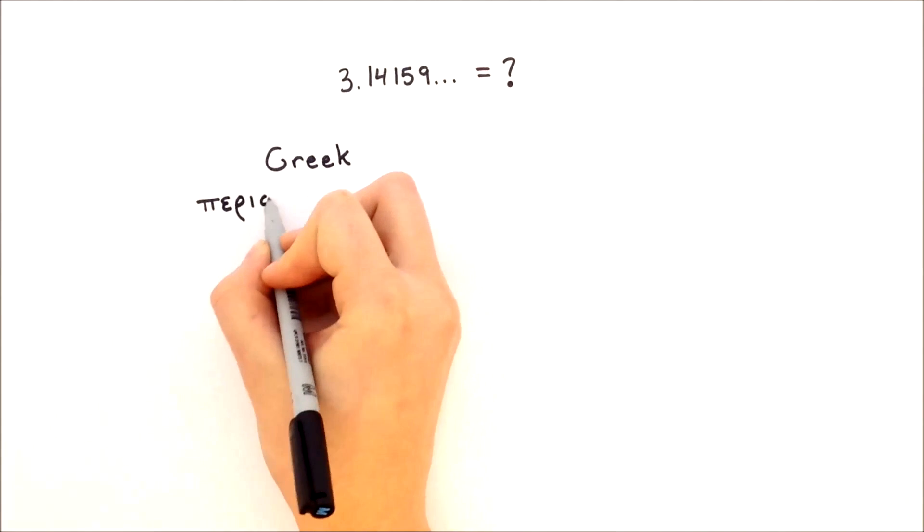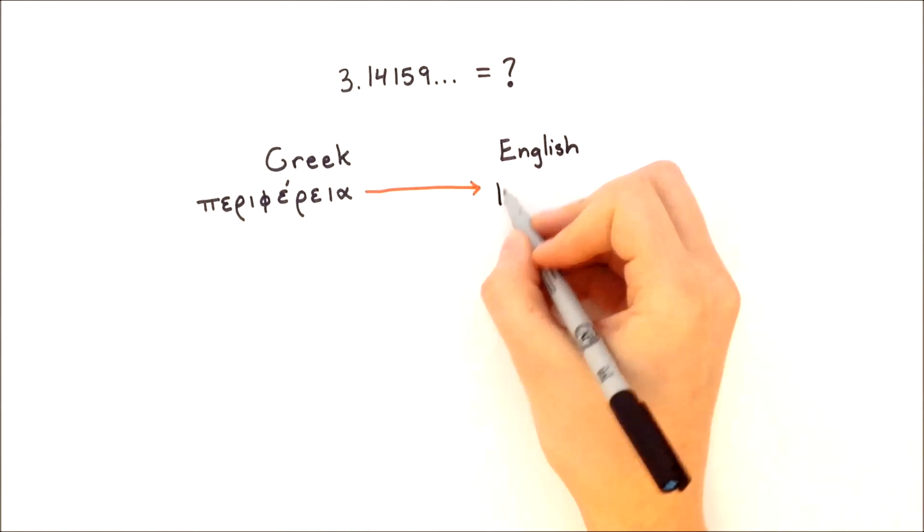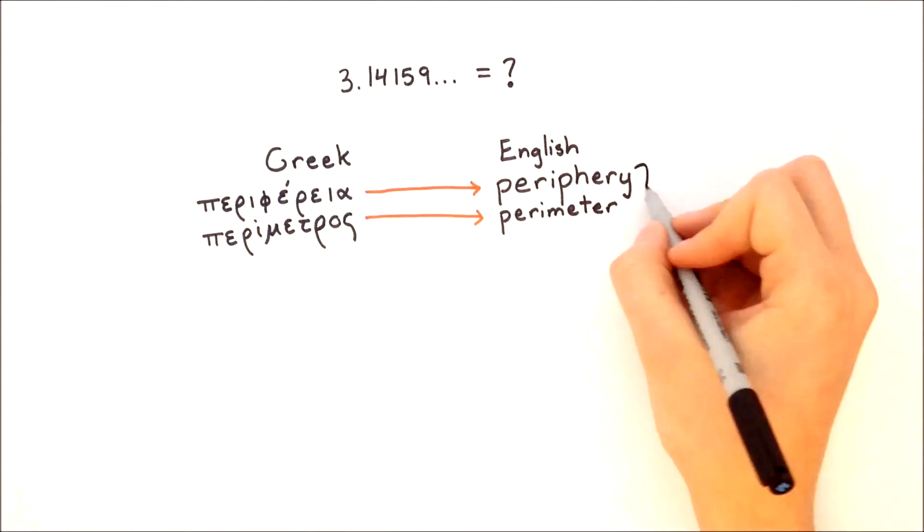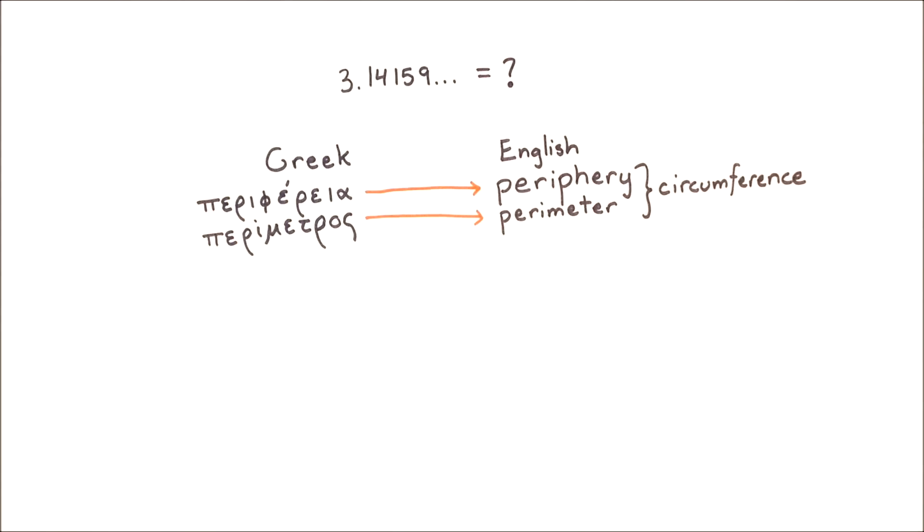Being Greek, he used peripheria, meaning periphery, or parametros, meaning perimeter, to describe the circumference of the circle.